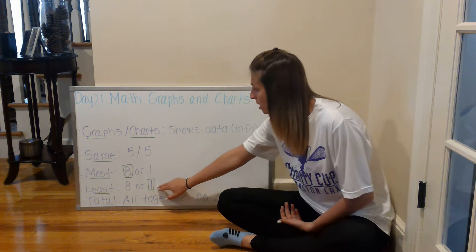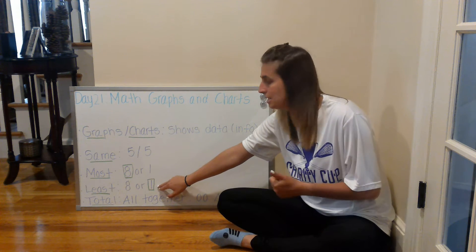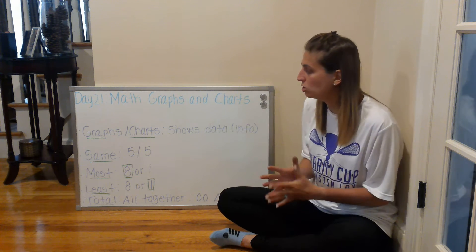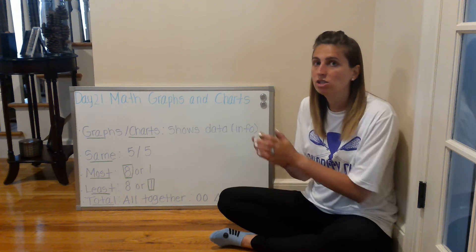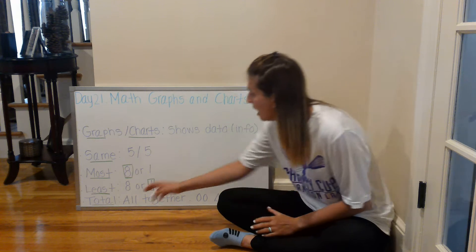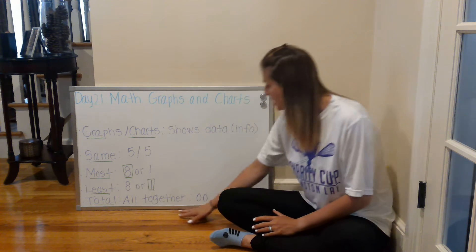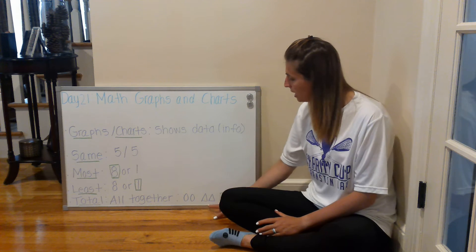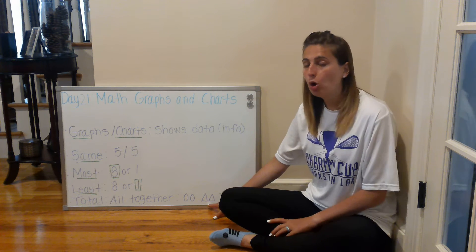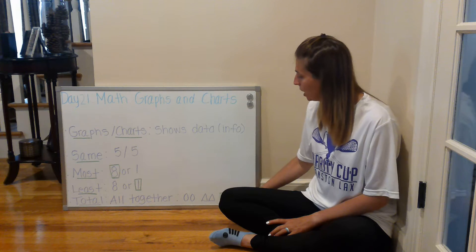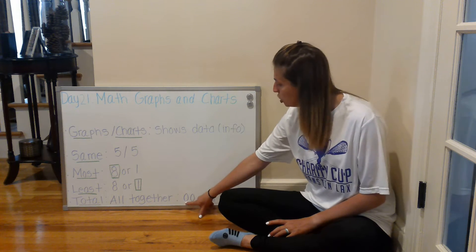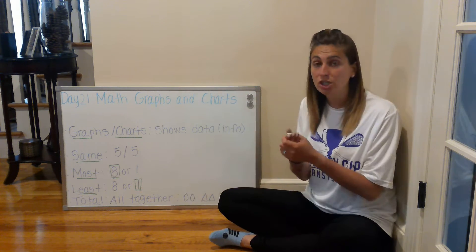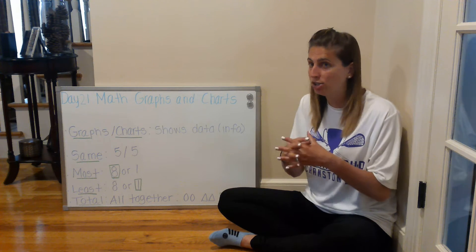Least — eight or one, one would be the least amount, the smallest amount. Least also means small or less. And then total means all together. So if I had two circles and two triangles, the total amount of shapes I have is four, because two plus two is four. The total is all together, just like when we do addition.